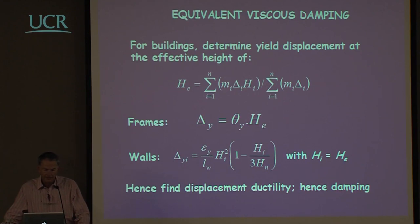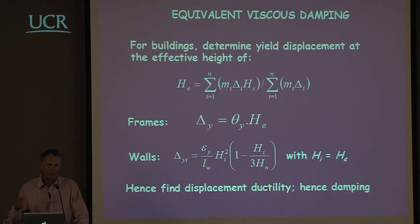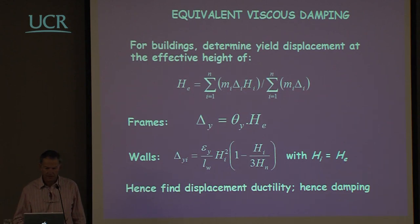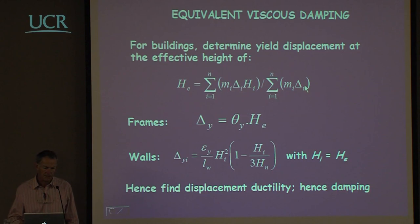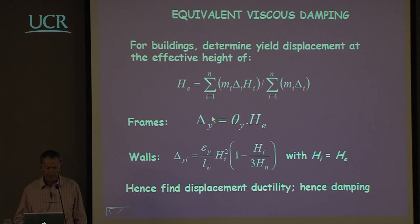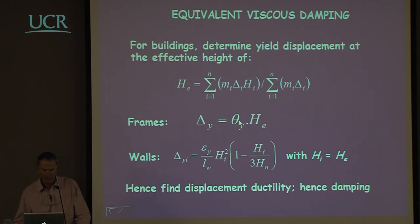For buildings, to determine the equivalent viscous damping we first need the height of our equivalent single degree of freedom system. The effective height is given by the sum of mass times displacement times height, divided by the sum of mass times displacement — typically about three quarters of the building height. For frames, the yield displacement is found as the yield rotation times this effective height, assuming a linear yield displacement profile.